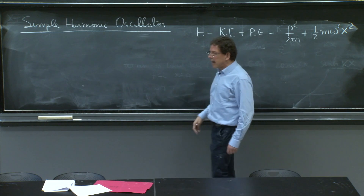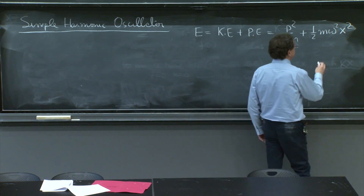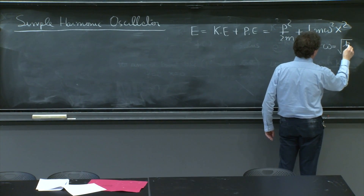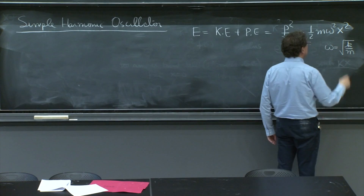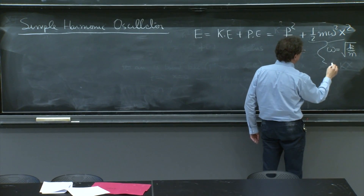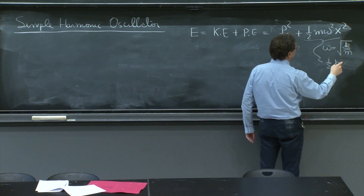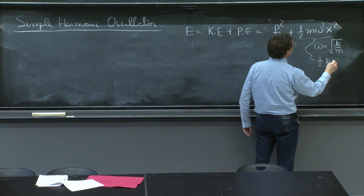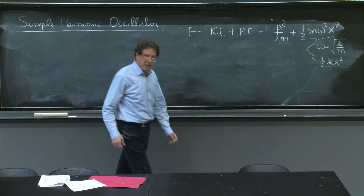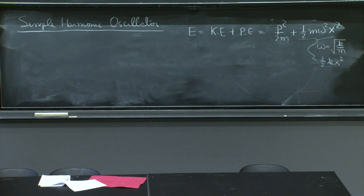This way of writing it may be a tiny bit unfamiliar. But you may recall that omega is equal to the square root of k over m — the so-called spring constant — in which the potential in terms of k would be one-half k x squared. And that's the potential energy stored in a spring that you've stretched a distance x.